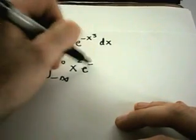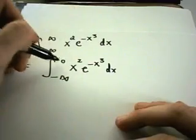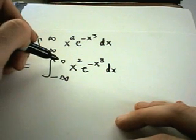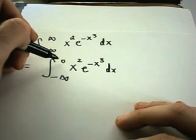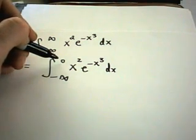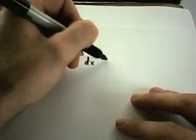x squared e to the negative x cubed. Zero is, well maybe not obviously, a good place to break things up because when you use it in your limits of integration, usually evaluating things at zero is pretty simple.